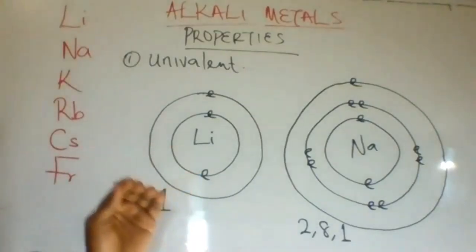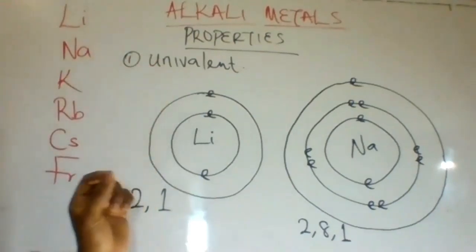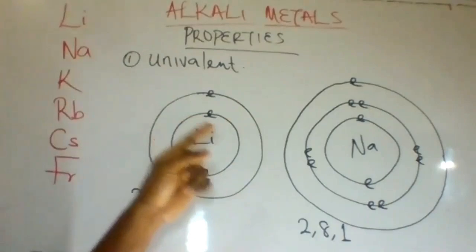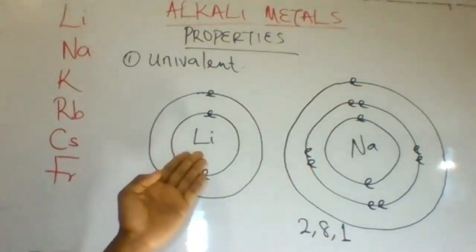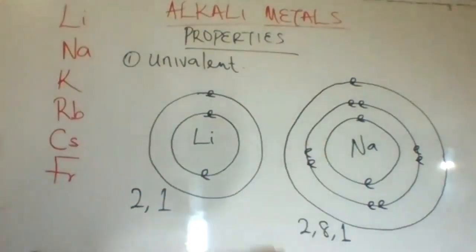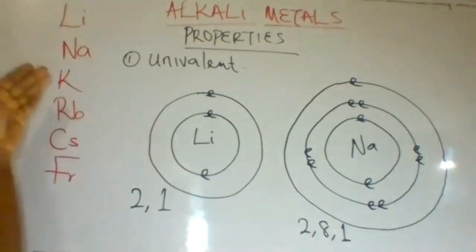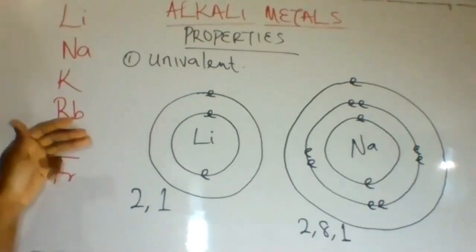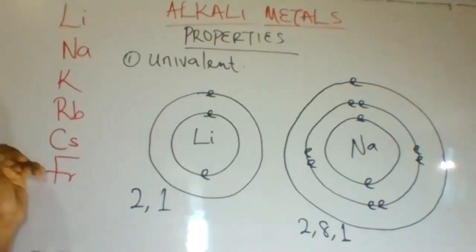Alkali metals are univalent. This means they have one valence electron, or they have one electron on their last shells. Lithium is 2-1, sodium is 2-8-1, potassium is 2-8-8-1, rubidium is 2-8-18-8-1, cesium is 2-8-18-18-8-1, and francium is 2-8-18-32-18-8-1.